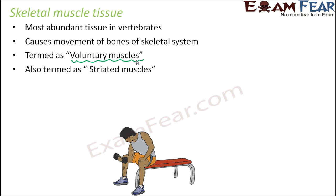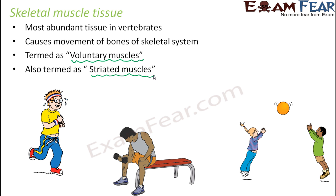Skeletal muscles are also termed as striated muscles. This is another name for these muscles. Why striated? Because of their structure. If you look at the structure of the skeletal muscle, you will see that there are striations — the muscles have some striped structures. Because of the presence of those stripes, these are called striated muscles.